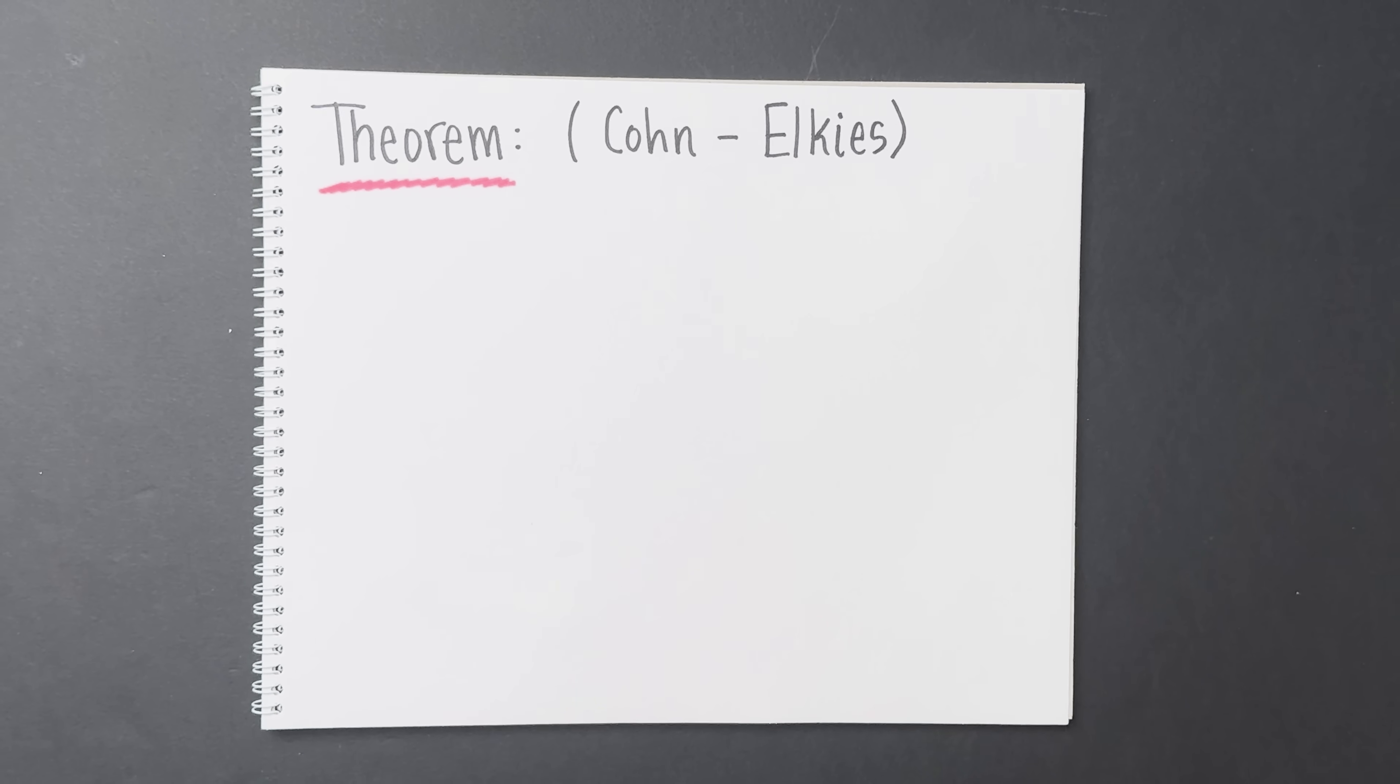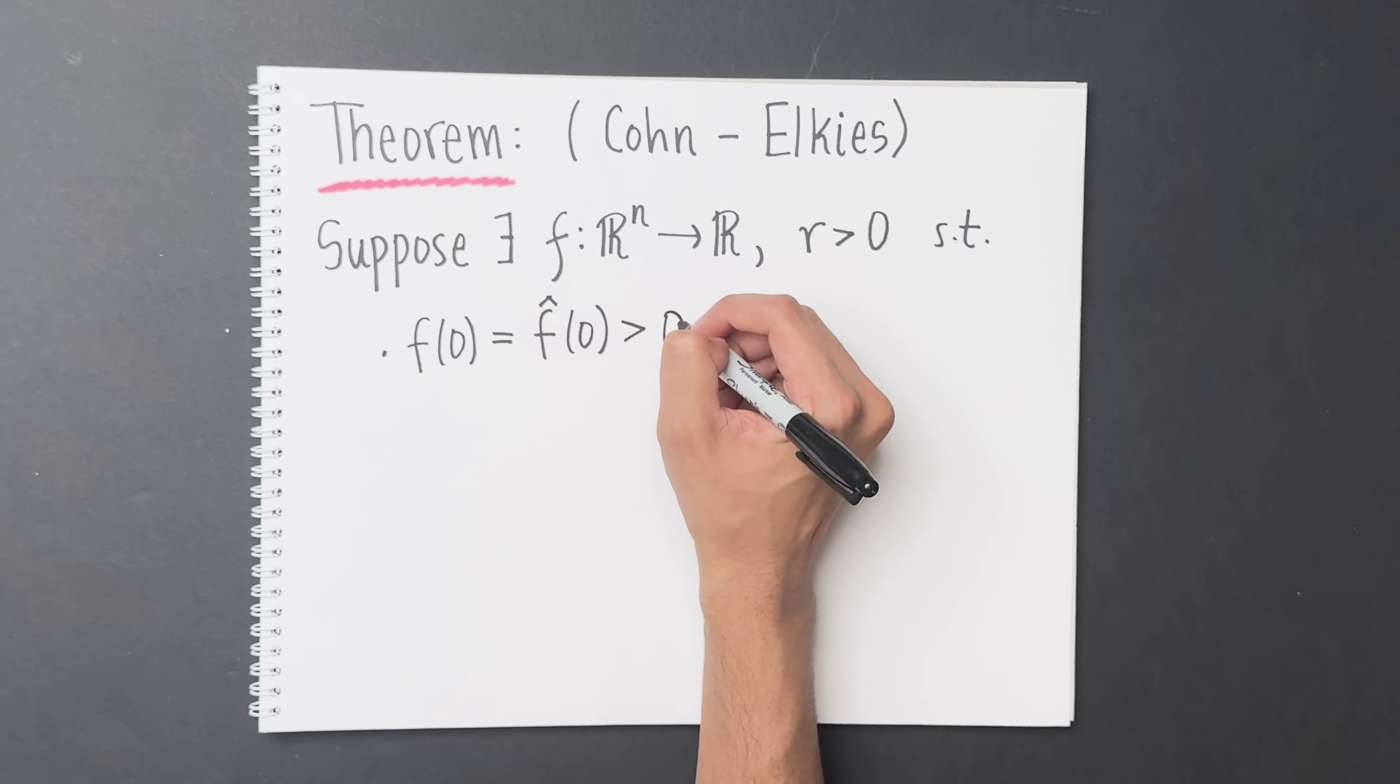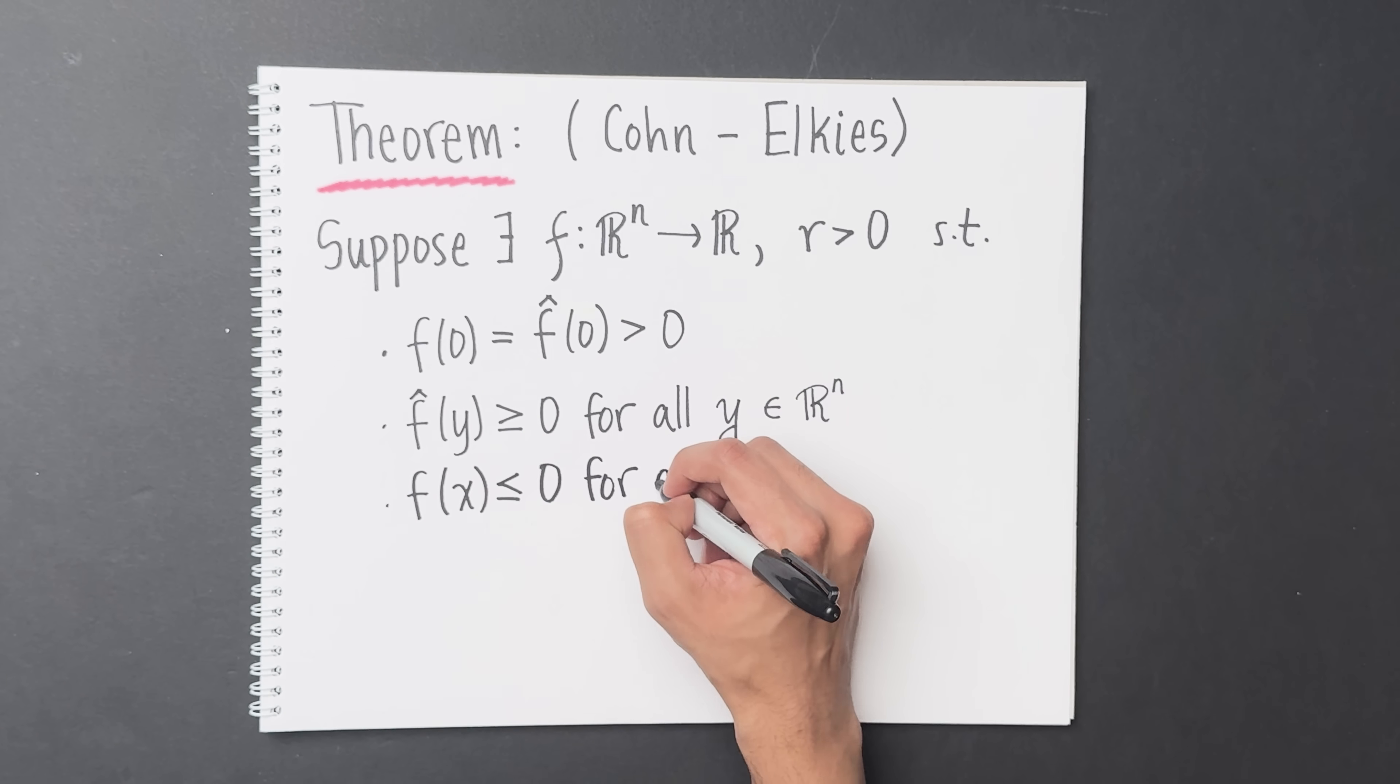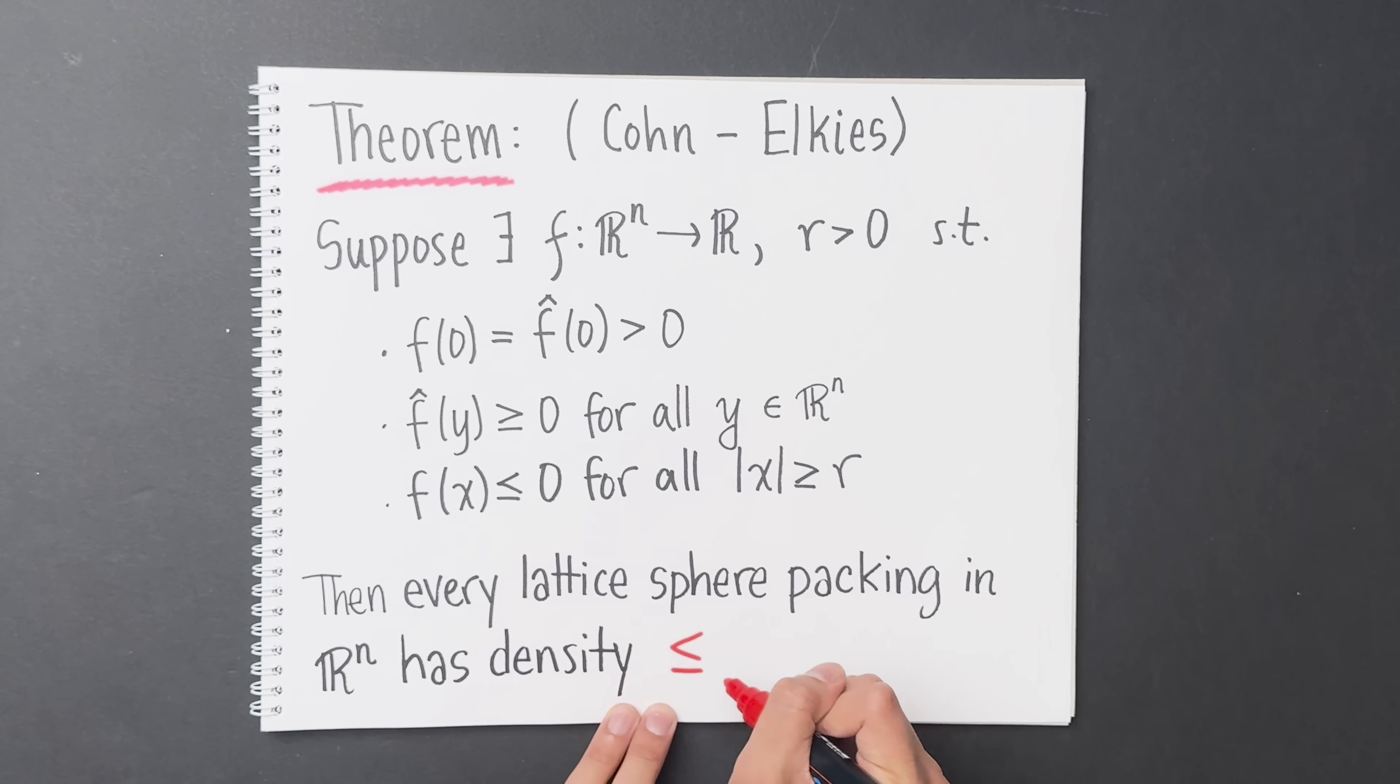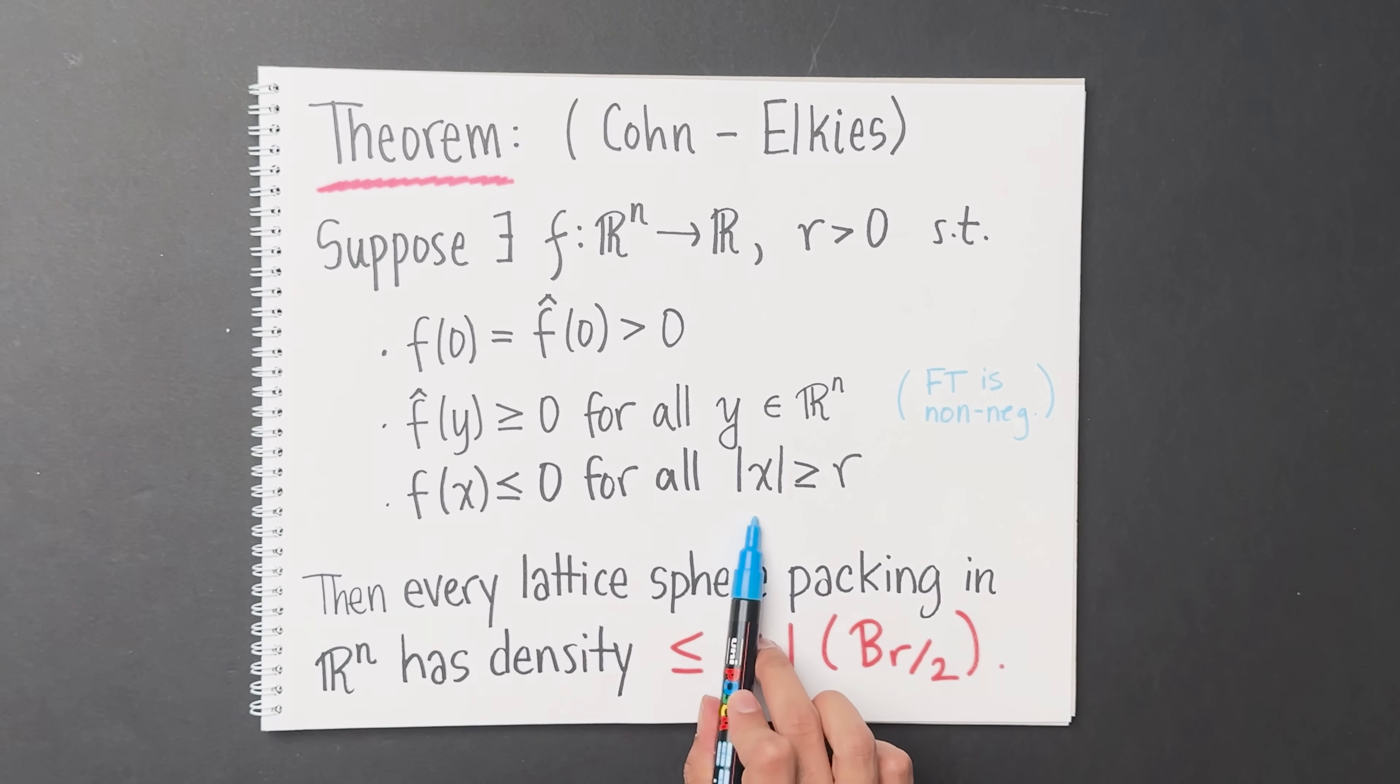With this in mind, here's what Cohn and Elkes proved. Suppose that there exists a function f from Rⁿ to R and a positive real number r satisfying these properties. First, f of 0 should equal f hat of 0, and they should both be positive. Second, f hat of y is always greater than or equal to 0 for all y in Rⁿ. And finally, f of x is less than or equal to 0 for all x with magnitude greater than or equal to R. If there exists such a function f, then every lattice sphere packing in Rⁿ has density at most the volume of the n-ball of radius R over 2. Let's parse this for a moment. If you can produce a function f and a number r with these properties—first of all, f of 0 equals f hat of 0 which are both positive, f hat is non-negative, and f is eventually non-positive—then you will have proved that every lattice sphere packing in Rⁿ has density at most this number.